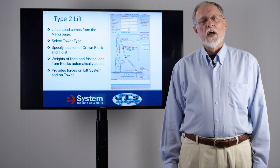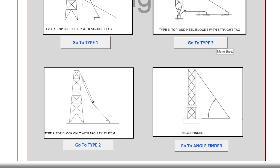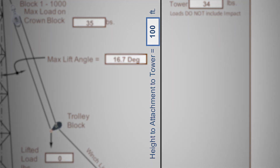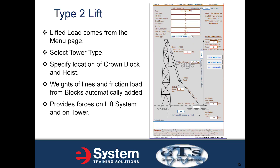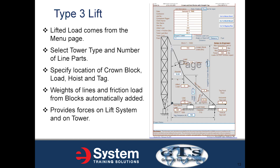Similarly, with the Type 2 lift, the loads come from the menu sheet. You select the tower type, specify the location of the crown block, and the distance out to the hoist. Again, the weights of the lines and the friction from the blocks are automatically added, and the forces on the lift system and on the tower are provided.